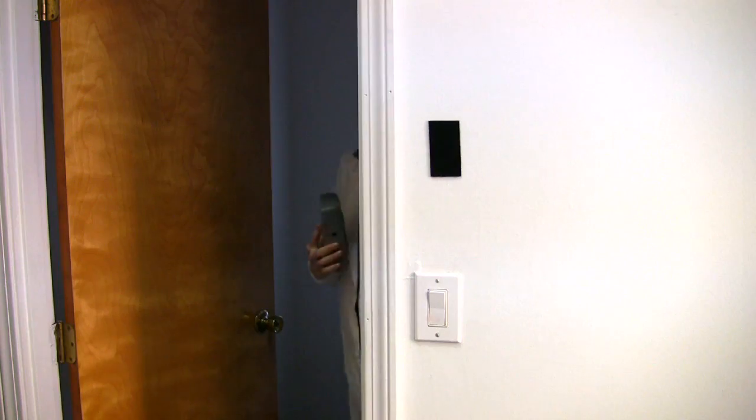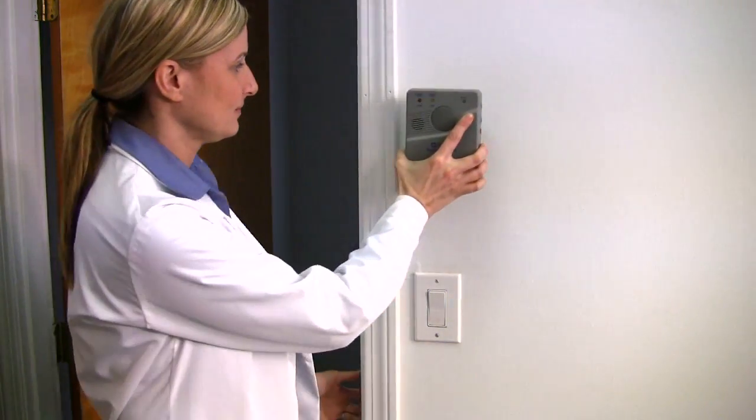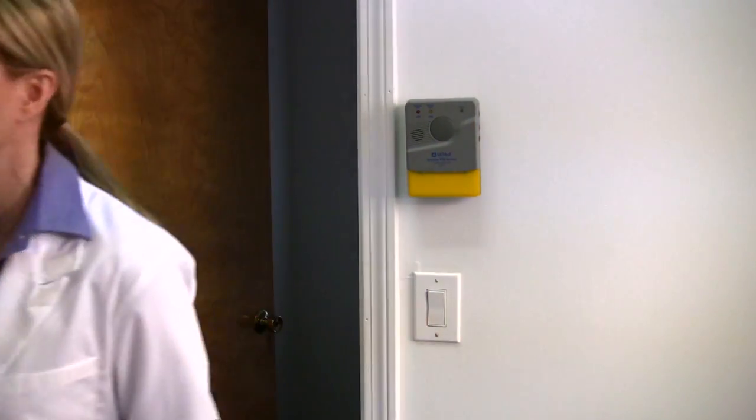Once you've established communication with the PIR unit, mount the receiver unit to the desired location up to 100 feet away. You can mount the unit using the included bracket and screws or by using double-sided tape.